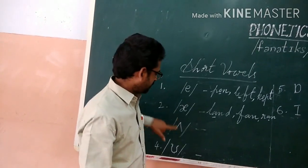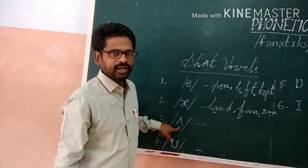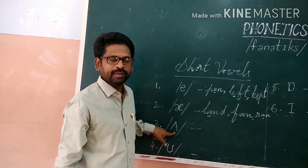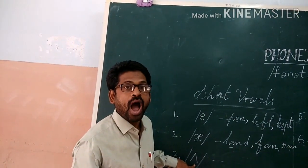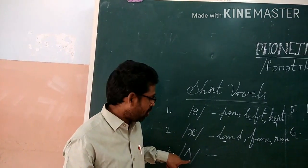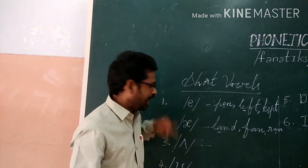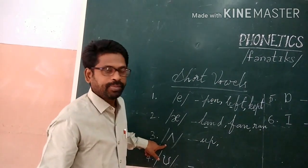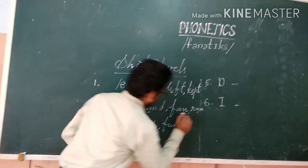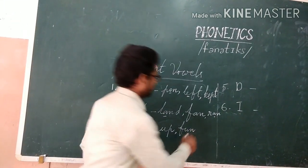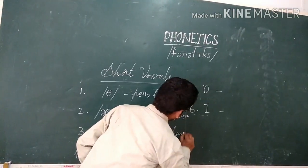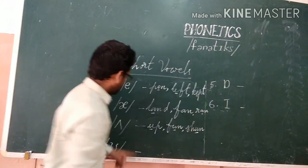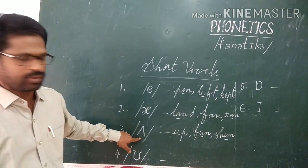The third symbol is a reverse V. When pronouncing this symbol, look at my mouth — wide opening of the mouth. Open your mouth wide to pronounce this symbol. Examples: U-P — up; F-U-N — fun; S-H-U-N — shut. Everywhere we pronounce this one with a wide opening of the mouth.